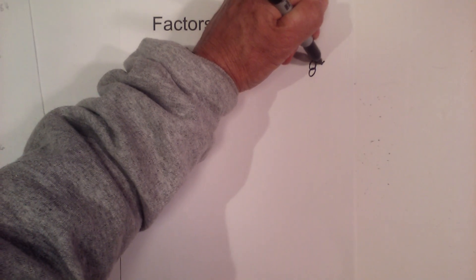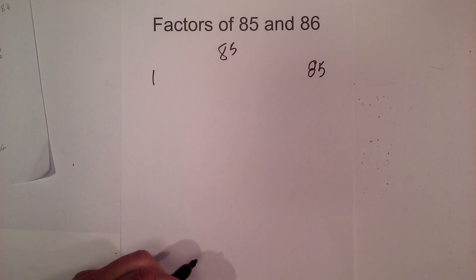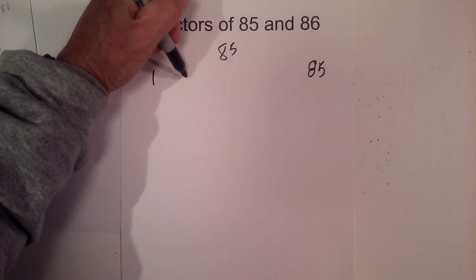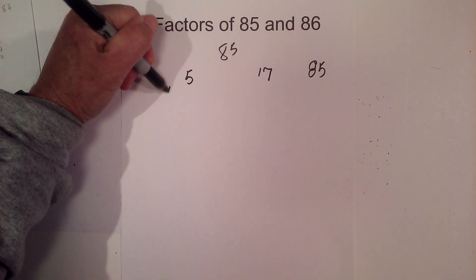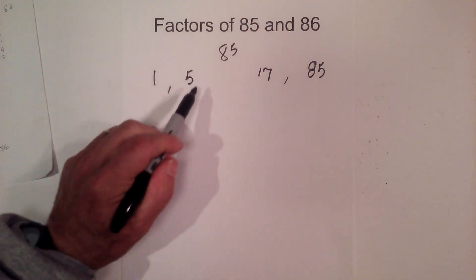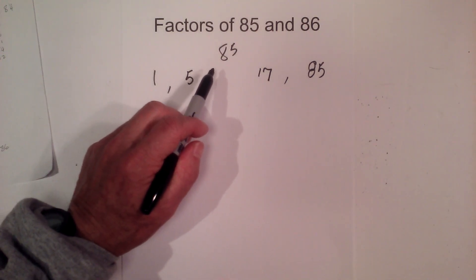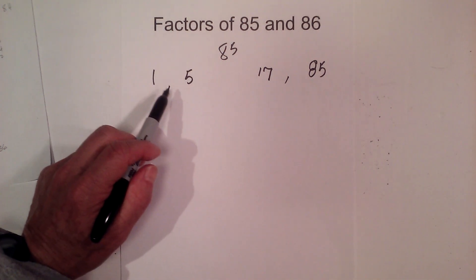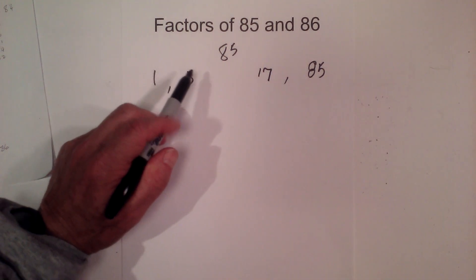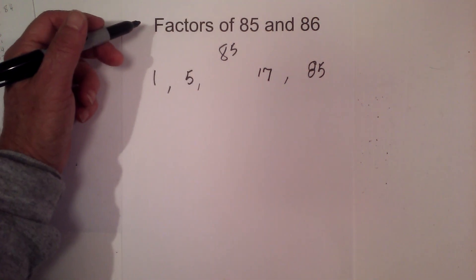1 times 85, and now we are going to go 5 times 17. And 6 does not go in, nor do 7, 8, 9, 10, 11, 12, 13, 14, 15, or 16. So the factors are 1, 5, 17, and 85.